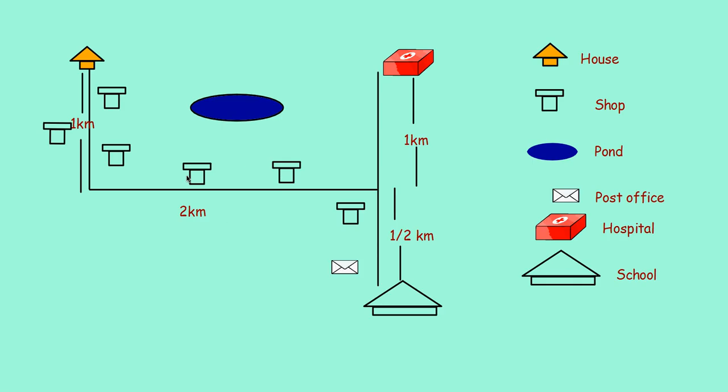But another boy drew the same route from his house to school in this way. From this, you can very easily identify how far his house is from the school. Yes, it is one plus two plus half, that is three and a half kilometers away from his school.